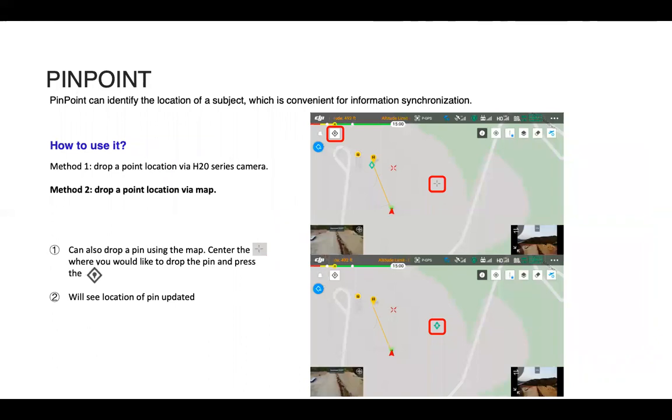Second method would be to open up the map, and then that black crosshair stays in the middle of the map, but you can drag the map around. Then once again, press the diamond button, and we'll see the location of the pin updated on the map itself.